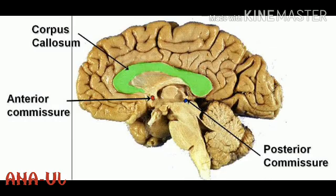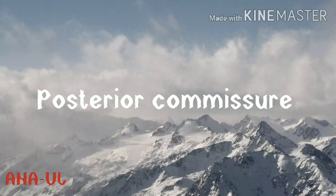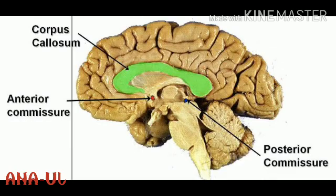Next we are going to learn about the anterior commissure. The anterior commissure is situated in the anterior wall of the third ventricle at the upper end of the lamina terminalis. The fibers passing through the commissure interconnect the olfactory bulbs of the two cerebral hemispheres. Other fibers interconnect the parahippocampal gyri and other parts of the temporal lobe.